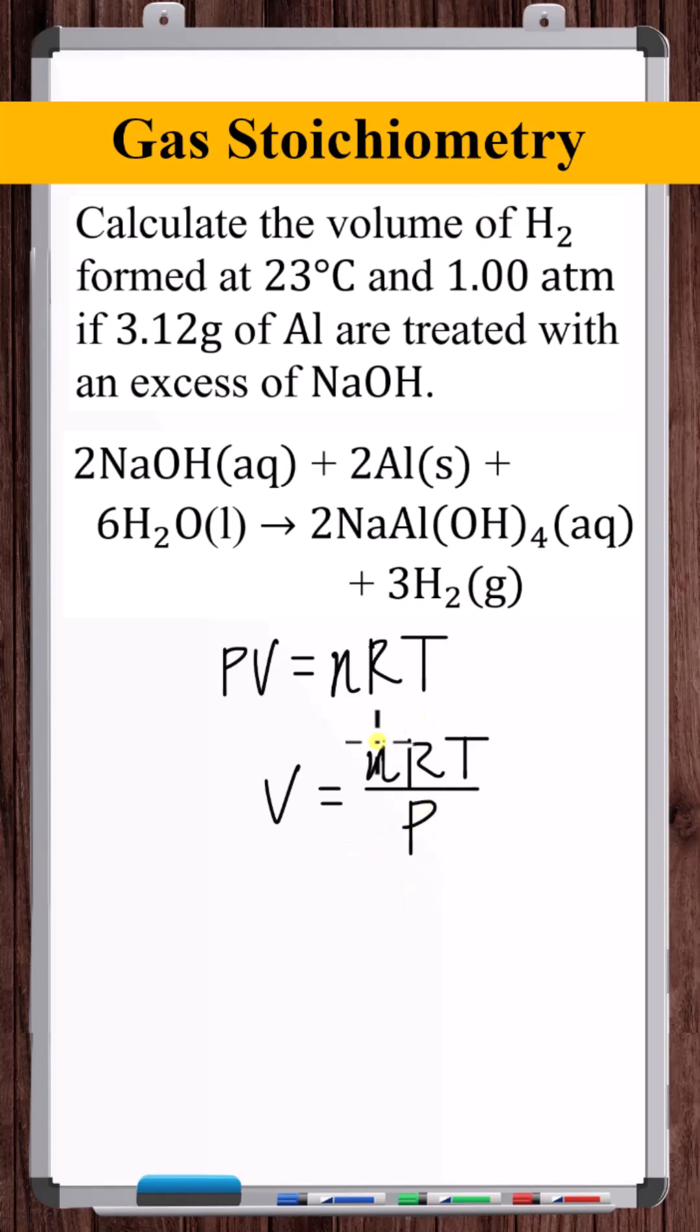R is a constant, so we just need n, the number of moles of H2 molecules in the gas body. To get n, we need to use stoichiometry. How many moles of H2 are produced from 3.12 grams of aluminum?